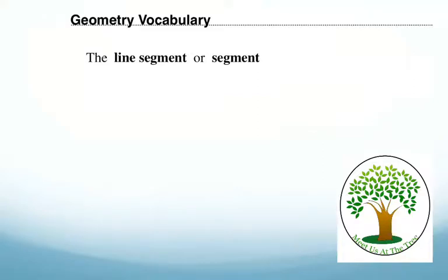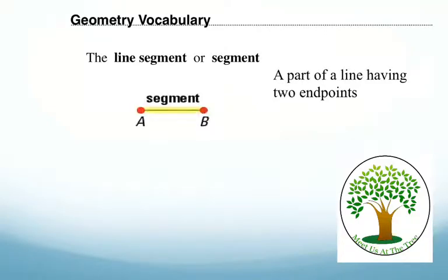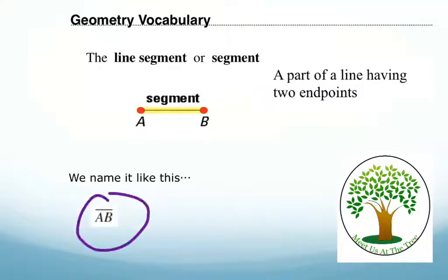Let's do some more vocabulary. Line segment. A line segment is just a portion of a line, or part of a line having endpoints. And so when we draw them, we put dots at the end. When we name them, we put a little line right above it. Notice that it doesn't have arrows, unlike the one we had before.